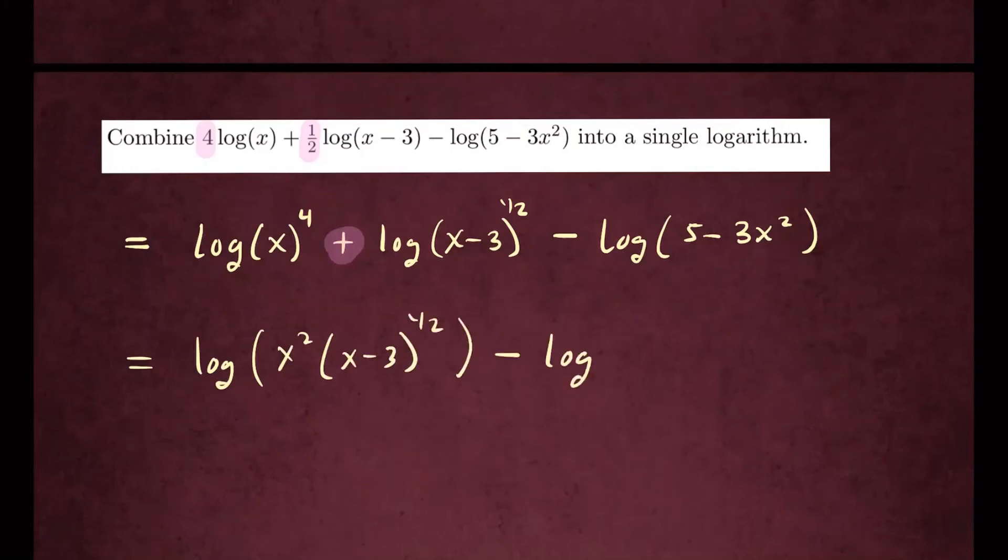Minus, rewrite the last term, log of five minus three x squared. And here I see there is a difference between two logarithms. I'm going to join them using quotient.